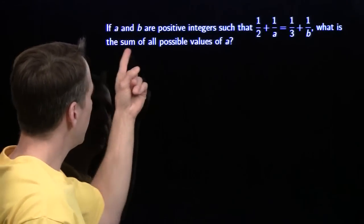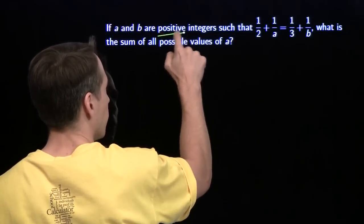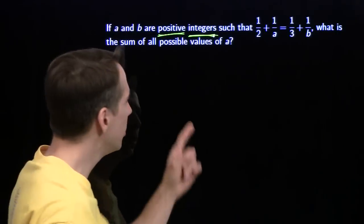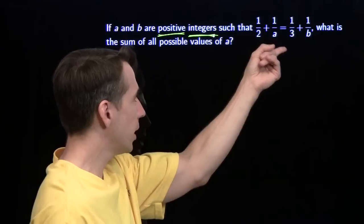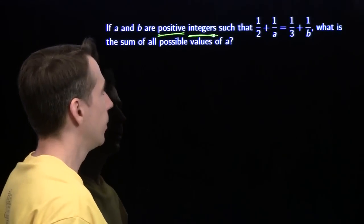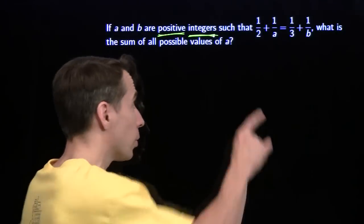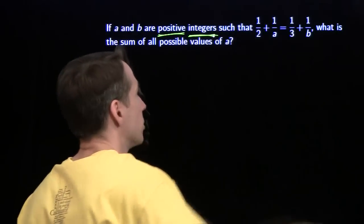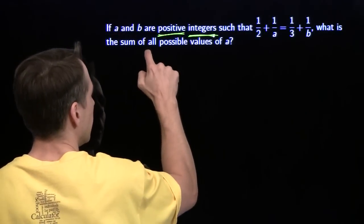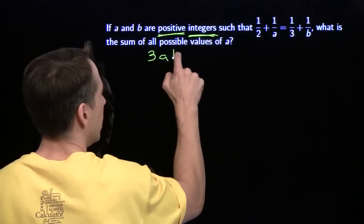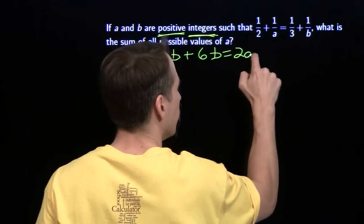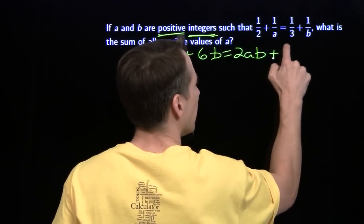Here, we have a and b are positive integers, so we're going to underline both those. Watch out for these sneaky words, such that 1 half plus 1 over a is 1 third plus 1 over b. We want the sum of all possible values of a. We're not going to stare. First thing we're going to do is get rid of those fractions. Multiply both sides by 6ab. We'll have 3ab plus 6b is 2ab plus 6a.